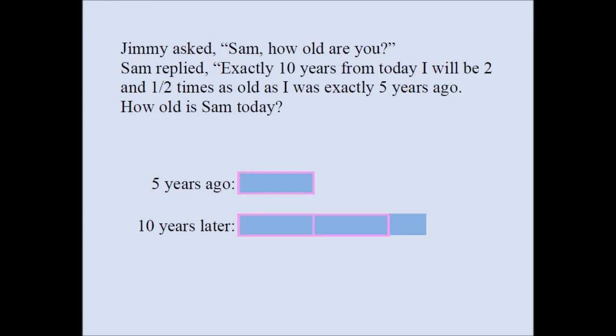Essentially, what I have here is an explanation that the age 10 years later is 2.5 times the age of Sam 5 years ago. Another important thing is that this length outside the 2 units is exactly half of each unit. This is 2, and this is half. That's what we mean by 2.5.